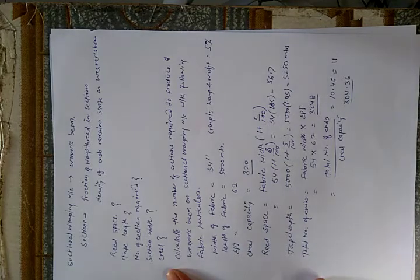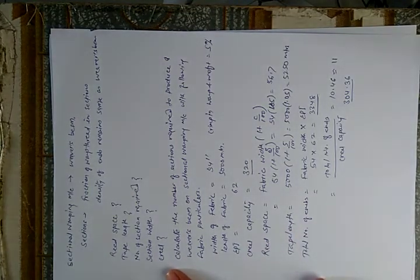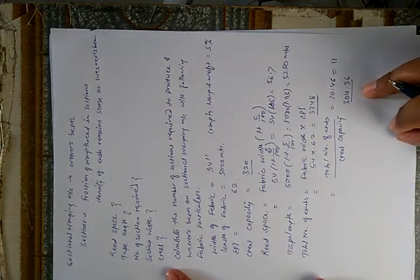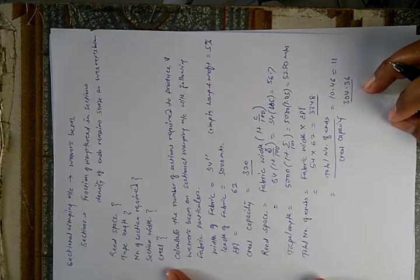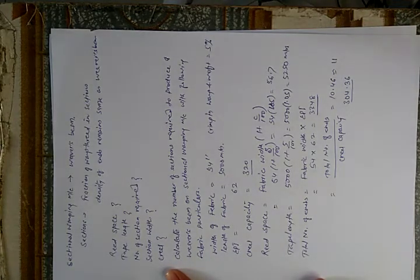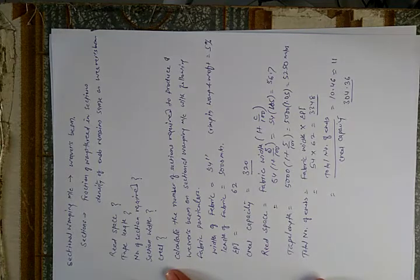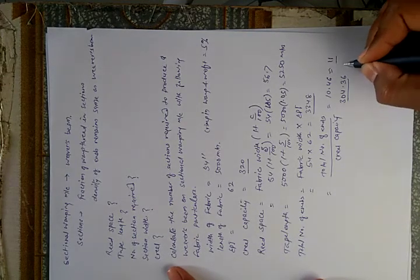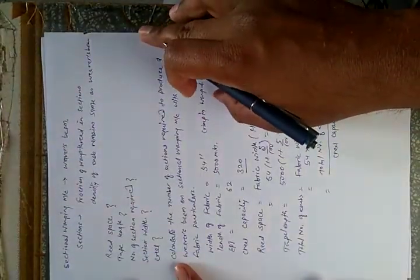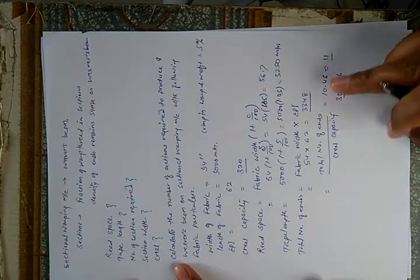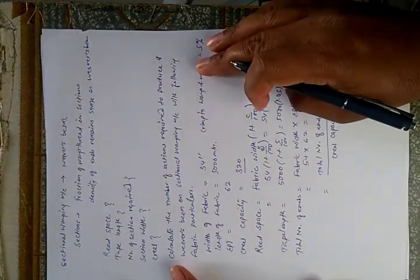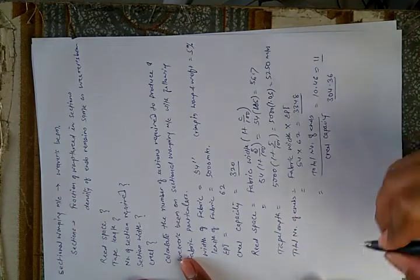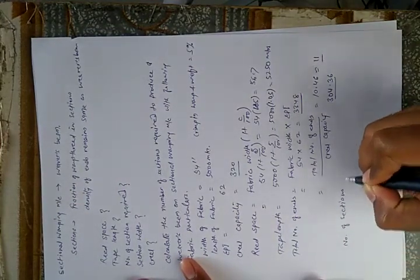If we multiply 305 ends by 11 sections, it becomes 3355. So 7 ends are extra. In case of 10 sections, we will use 305 ends, but for the last section we can use 298 ends, because 7 ends are increasing. So we produce 10 sections with 305 ends and for the last section reduce the number of ends, giving us 3348 total ends in our weaver's beam. Our number of sections is 11.